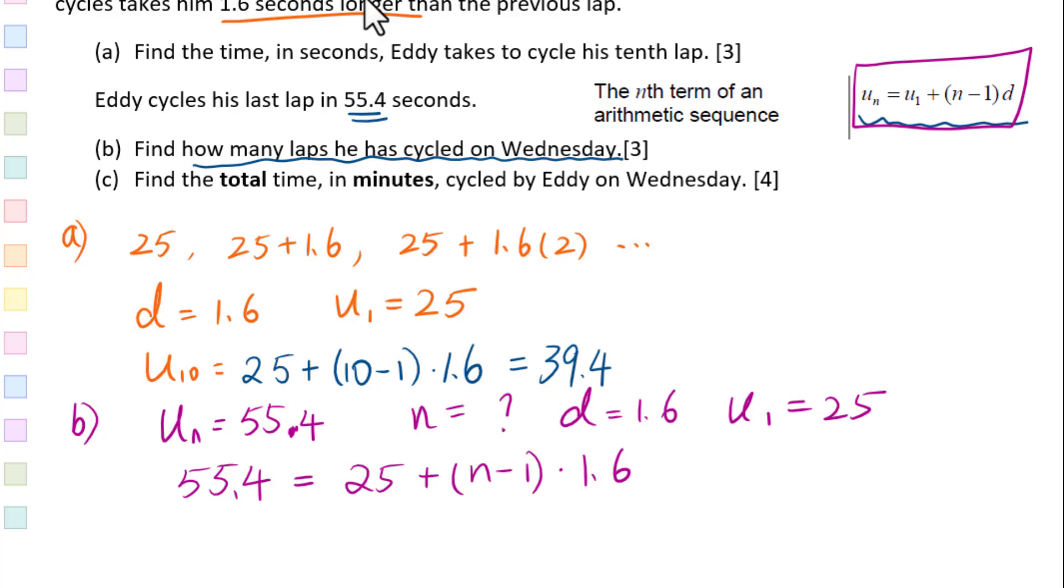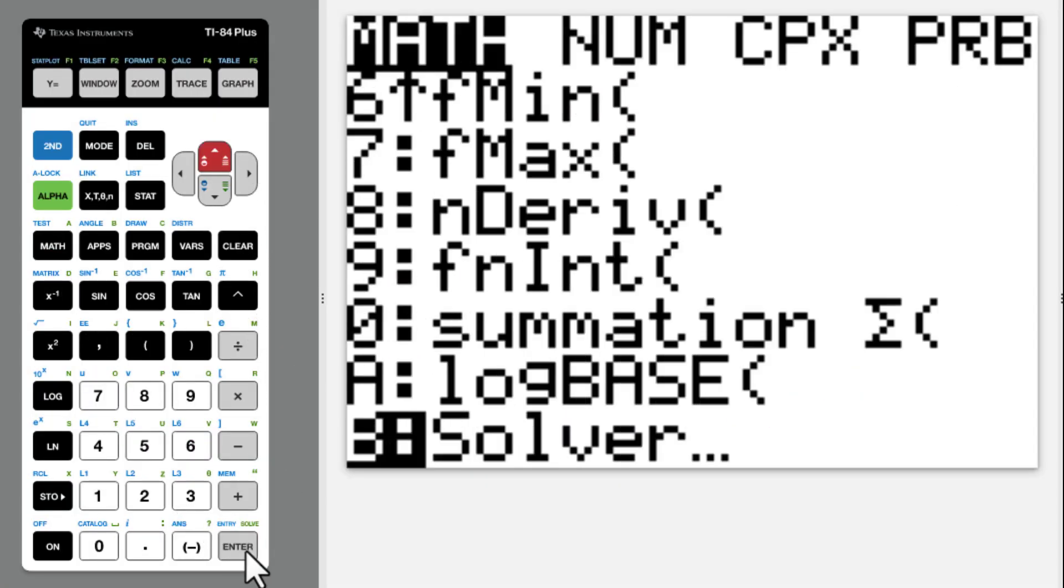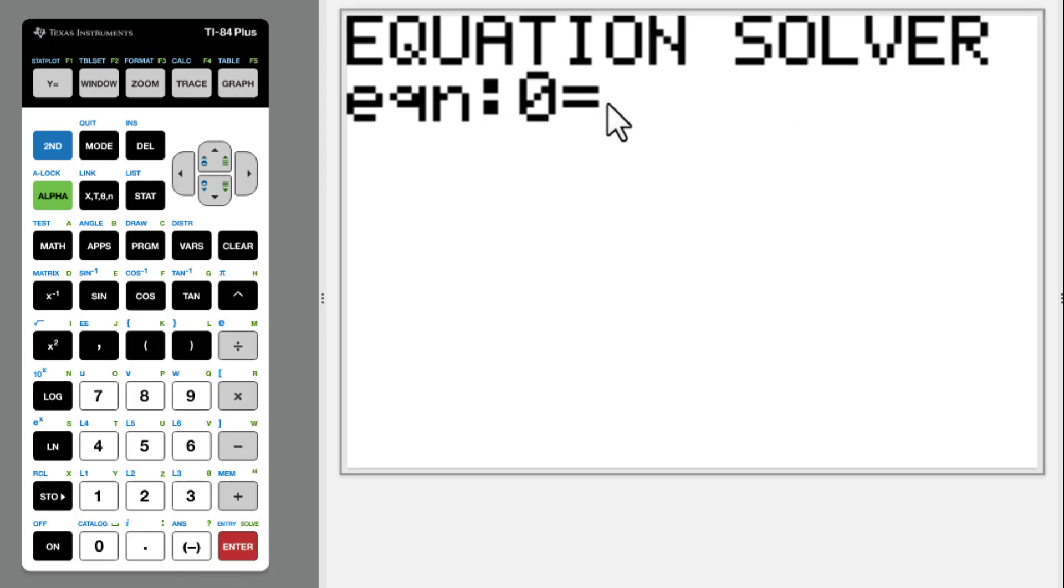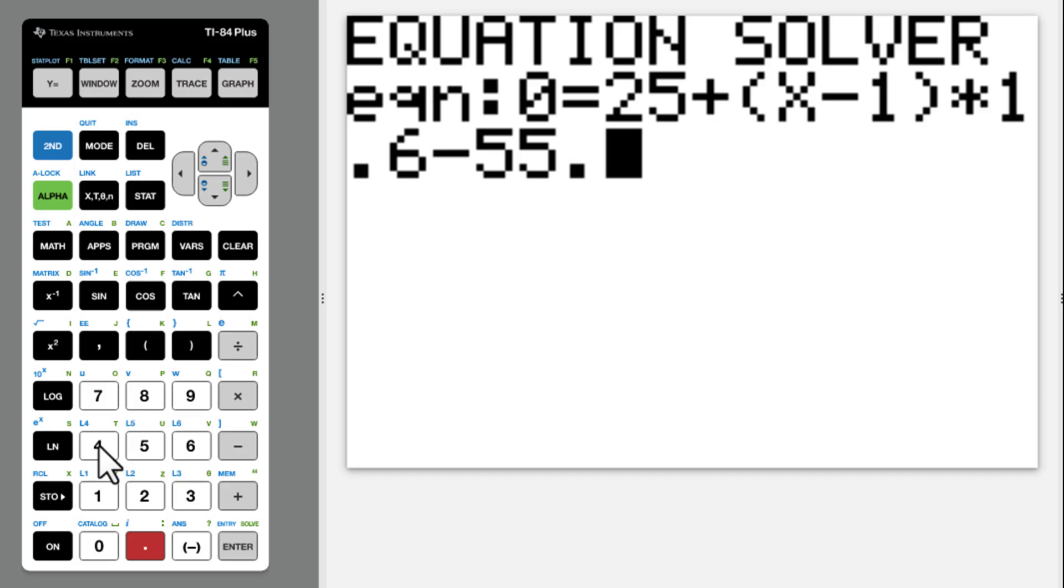Since this exam is calculator-based, we can solve this equation by equation solver. We just need to subtract 55.4 both sides: 0 equals 25 plus n minus 1 times 1.6 minus 55.4. Since this is a simple linear equation, we can go to equation solver directly. Math, F, upper arrow, enter. We will put the equation solver over here. 25 plus change n into x minus 1 times 1.6 minus 55.4. Enter, enter.